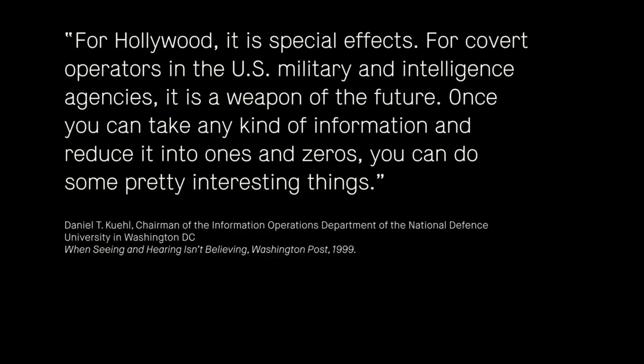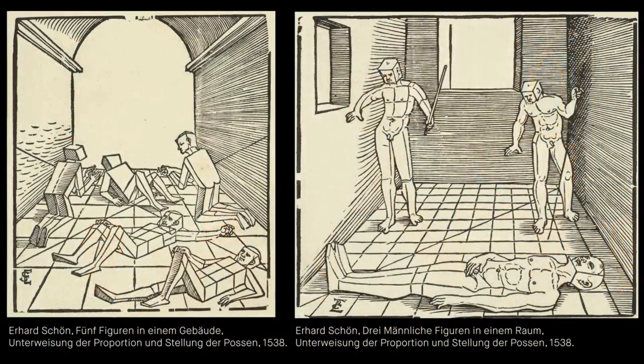A quote that keeps coming back in this work is from 1999 — a time when technologies like these were still, for a general public, much more in a dream world. Something made by Pixar, big studios, huge render engines, but nothing attainable for a general public. The quote goes: 'For Hollywood it has special effects; for covert operators in the US military and intelligence agencies, it is a weapon of the future. Once you can take any kind of information and reduce it into ones and zeros, you can do some pretty interesting things.' One important part of this quote is really this reduction to ones and zeros — the idea that by translating a physical world into binaries, you create something you can twist and bend into a different narrative.